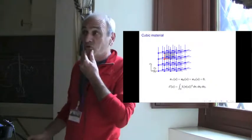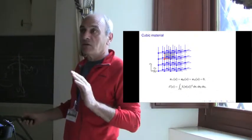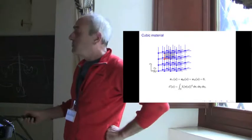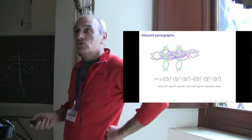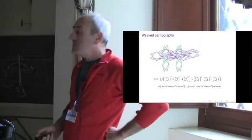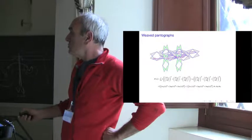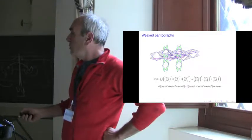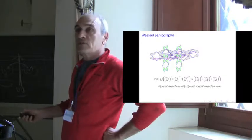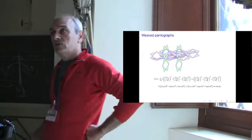Now, you can go to 3D materials if you want. The cubic lattice gives a classical elastic material, but then you can mix the pantographic structure in the three directions of space. And in that case, you get an energy which has many second gradient terms — all the complete second gradient terms, gradient of extension terms, and bending terms, plus a first gradient energy.